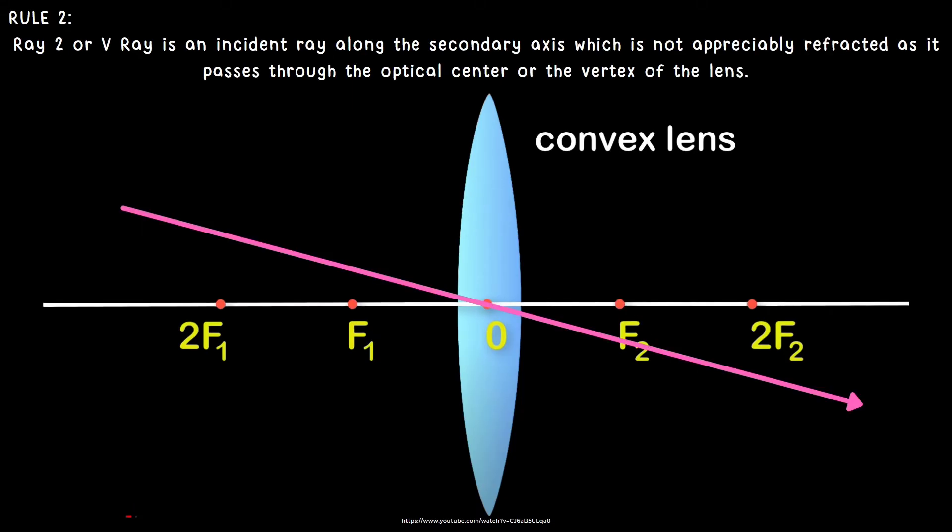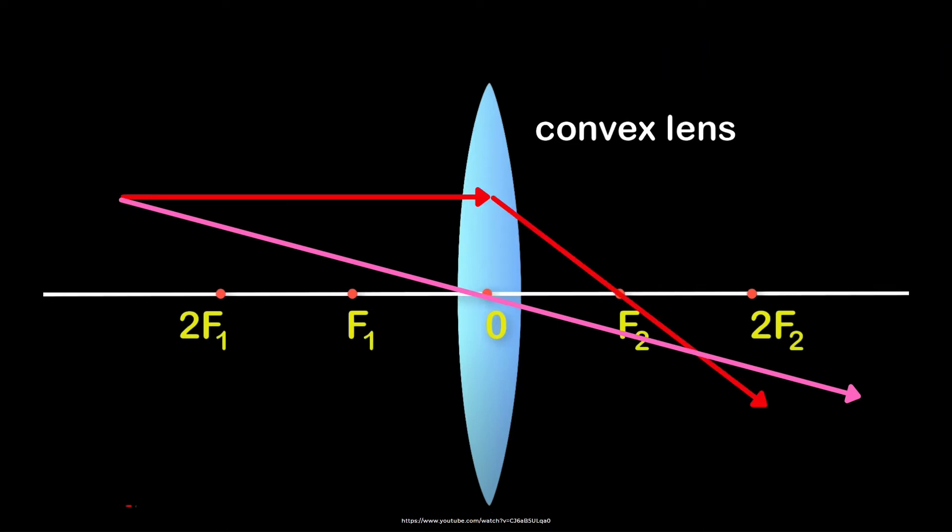We use F2 to represent the focus because it's on the other side of the convex lens. The second rule: Ray 2, or the V ray, is an incident ray along the secondary axis, which is not appreciably refracted as it passes through the optical center or the vertex of the lens. This is the second ray that passes through the vertex or optical center. This is the complete light ray rule for convex lens: ray 1 and ray 2.